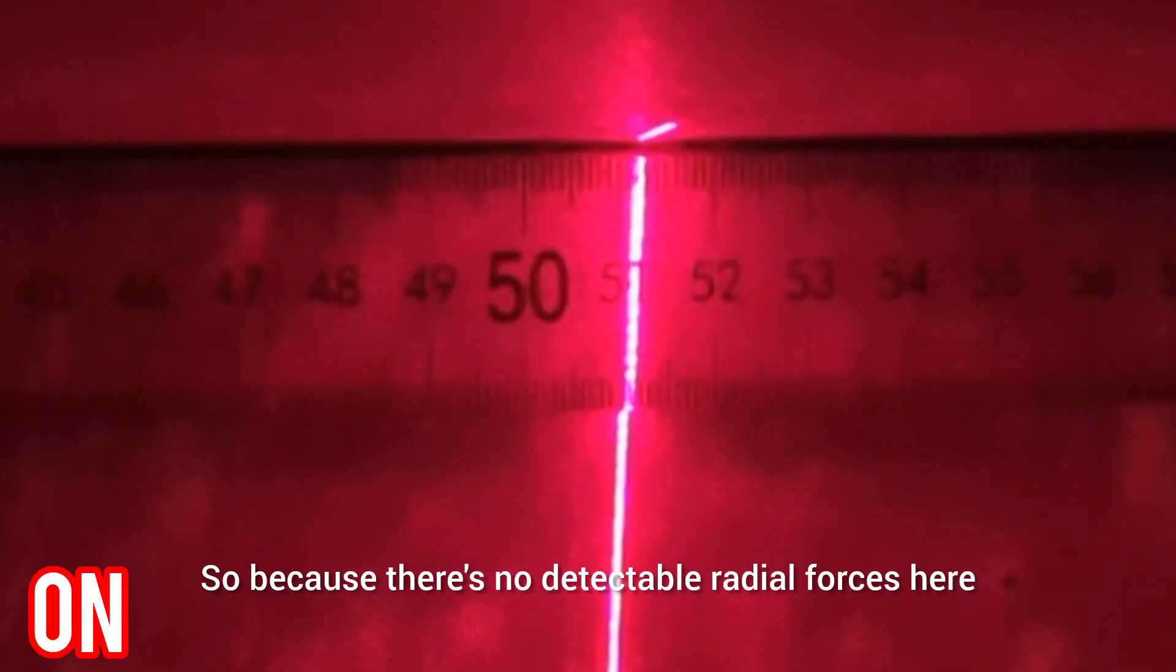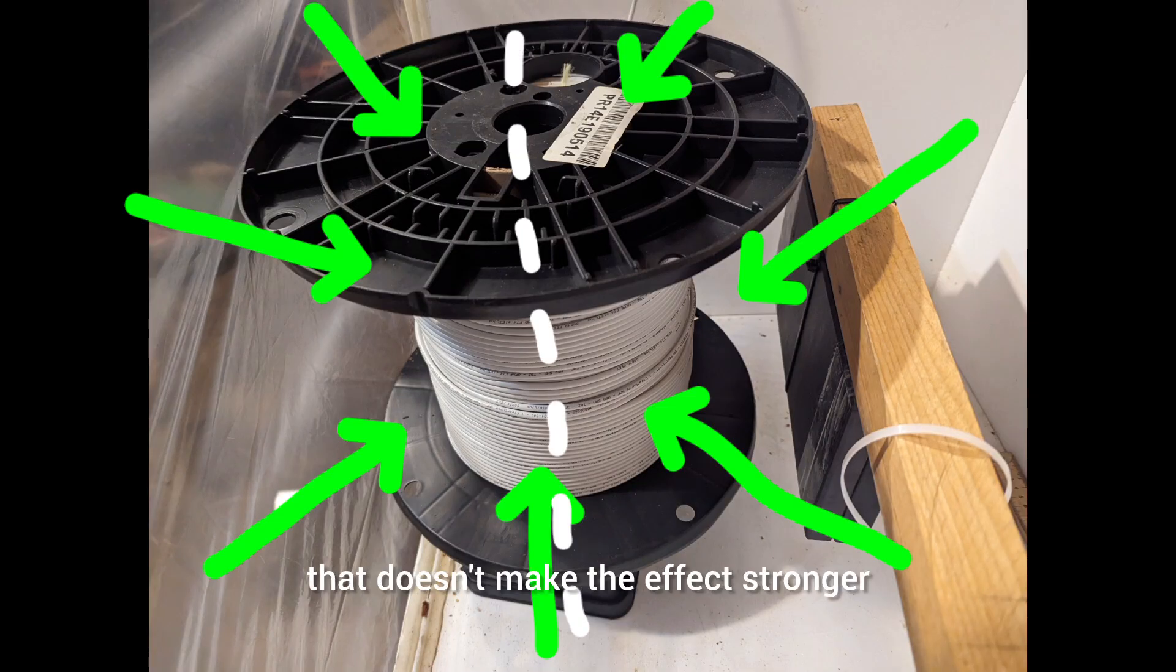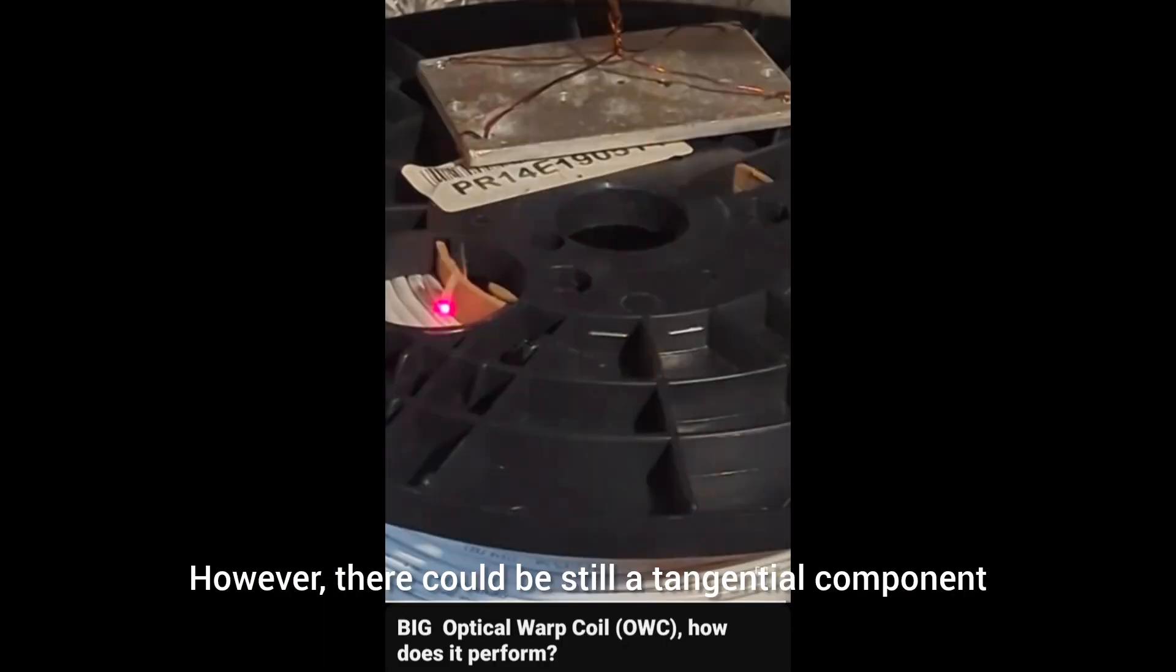So because there's no detectable radial forces here I might conclude that having a bunch of windings like that doesn't make the effect stronger. However there could be still a tangential component which I still need to check for based on an observation I made but need to work with that a bit more.